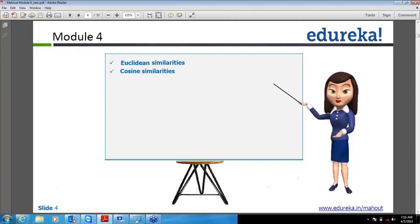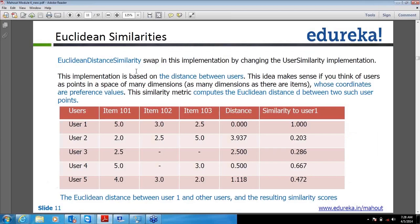Coming to Euclidean similarity, it calculates the distance between two users and then finds the similarity. If you see the first column, the distance is calculated as 0 because obviously for the particular user, distance is 0.